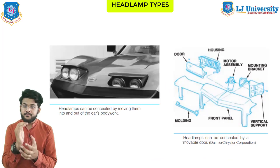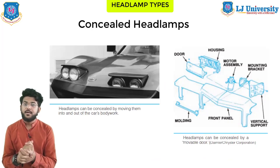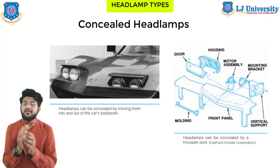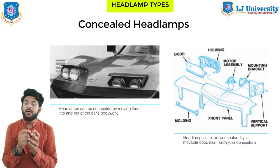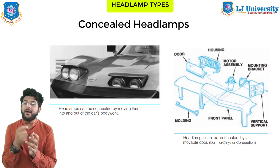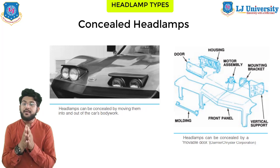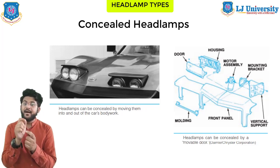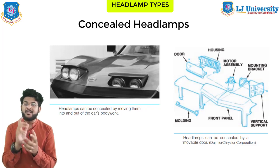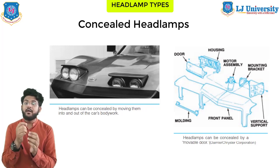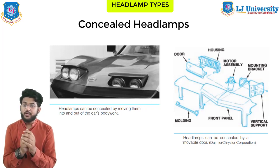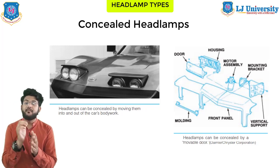Next is concealed headlamps. Another automotive styling feature is the concealed headlamp — either stationary lamps behind a movable door, or lamps that move in and out of the car's bodywork. The doors can be metal or clear plastic. Electric motors or vacuum actuators operate the headlamp concealing mechanism. Electrically operated systems usually have a relay controlling current flow to the motor, while vacuum actuator systems work with engine vacuum stored in a reservoir.